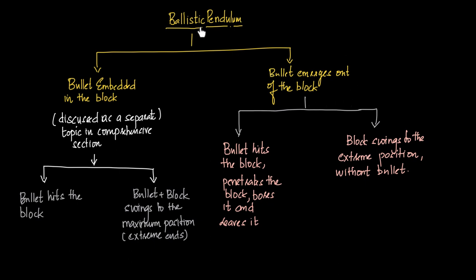What is a ballistic pendulum? It is an experimental mechanism used to find out the velocity of projection. There are two cases: one in which a bullet is embedded in the block, and the other when the bullet emerges out of the block.